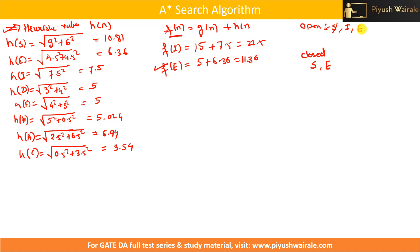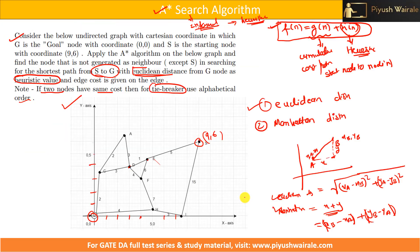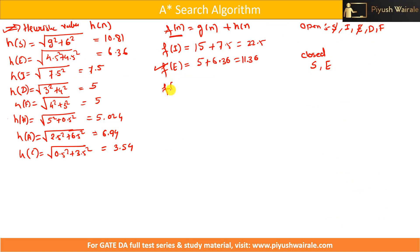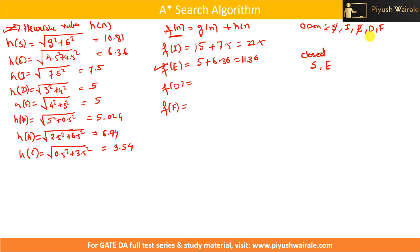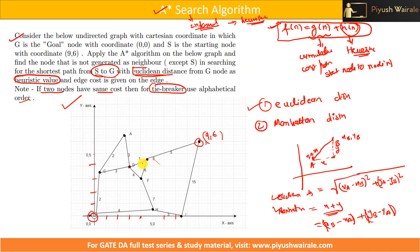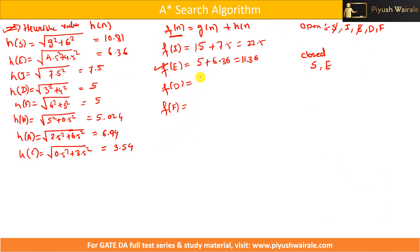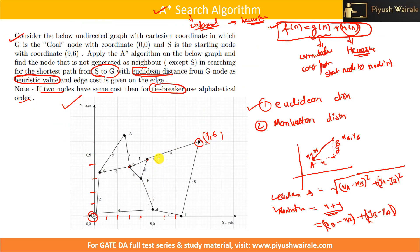We explore E and remove it from the open list. From E, we can go to D or F. The cumulative cost from s to D via E is 5 + 1 = 6. So f(D) = 6 + h(D) = 6 + 5 = 11. The cumulative cost from s to F via E is 5 + 6 = 11. So f(F) = 11 + h(F) = 11 + 5 = 16. The lowest is D at 11.